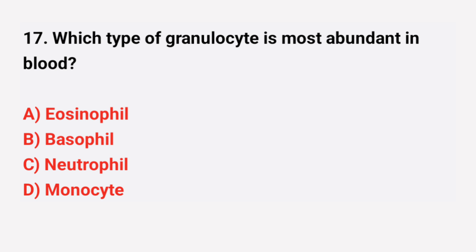Question number 17: Which type of granulocyte is most abundant in blood? The right answer is option C: Neutrophil.